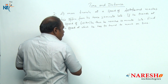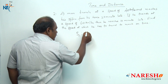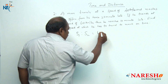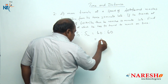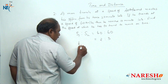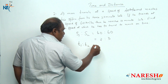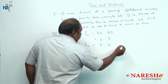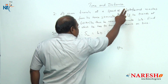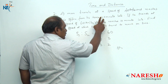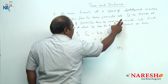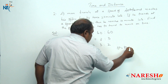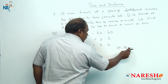Once again, what is constant in this problem? Distance. If distance is constant, speed and time are inversely proportional. The speed ratio is 40 to 60, which is 2 is to 3. The time ratio when distance is constant should be 3 is to 2. The difference in time is one part. Travelling at 40 kilometers per hour he is late by 20 minutes, and travelling at 60 kilometers per hour he is late by 10 minutes — the difference is only 10 minutes. So one part equals 10 minutes.